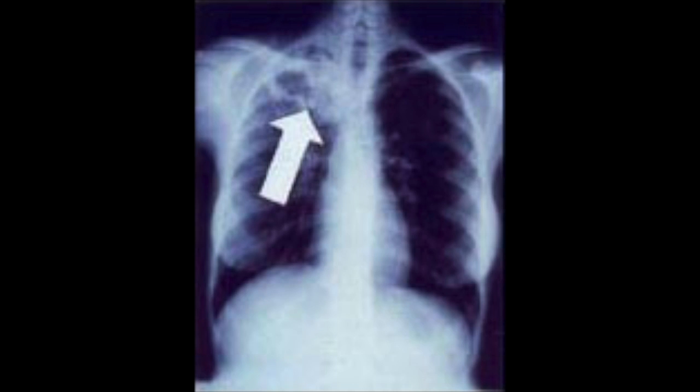What is the arrow pointing to on this chest x-ray? It looks like a cavitation — you might think klebsiella, but cavitations at the apices of the lungs are actually more indicative of tuberculosis, which is what we're going to cover next week. So keep this in mind.